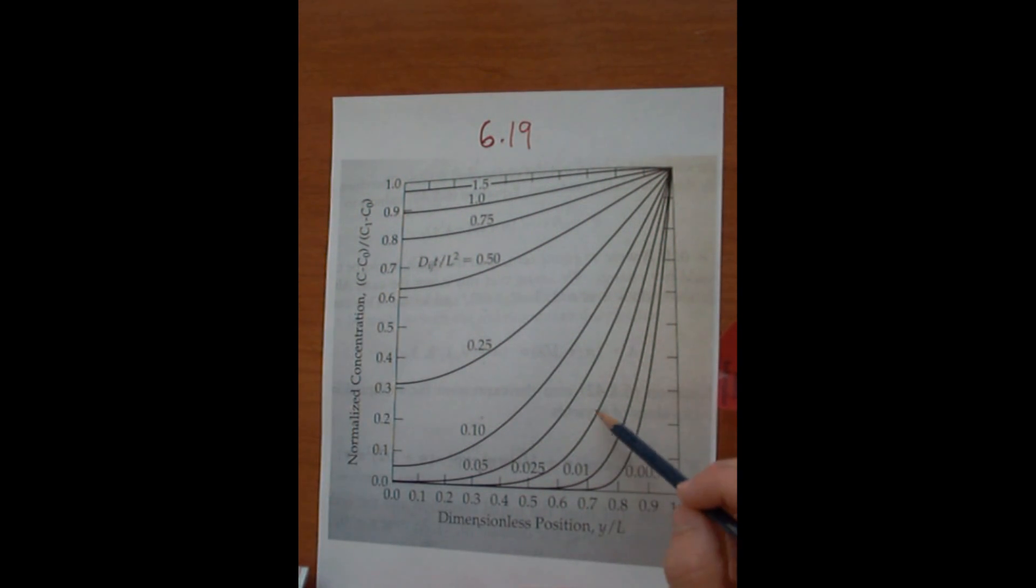So each one of these lines are tau, which again is the dimensionless time. So here you can see the equation for tau, Dijt divided by L squared. So what's handy about this equation is, this graph here,